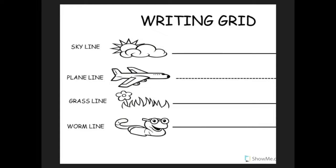Hi, boys and girls. Let's make some letters. Notice right now we have the skyline, the plain line, the grass line, and the worm line. These are going to help you figure out where to stay on the paper while you write your letters. It's called our writing grid.